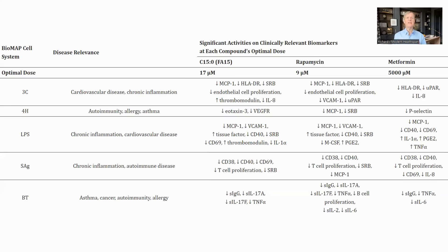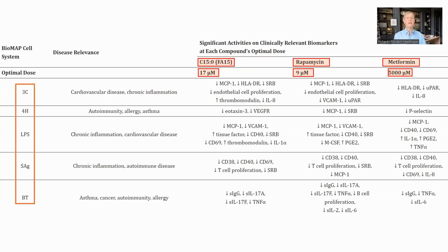Across the 12 systems tested, C15 shared 24 significant cell-based activities with Rapamycin and 11 with Metformin. Here is the table comparing C15 to Rapamycin and Metformin, along with the optimal doses: C15 was 17 micromolar, Rapamycin was 9 micromolar, while Metformin was 5000 micromolar. Each line of the table represents a cell type — for example, the top line is 3C cells, human endothelial cells with inflammation, relevant for cardiovascular disease and chronic inflammation.